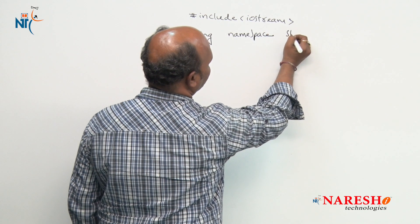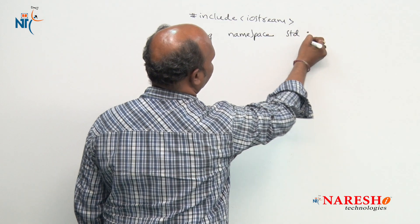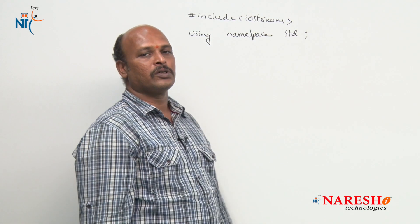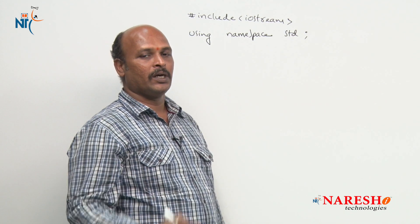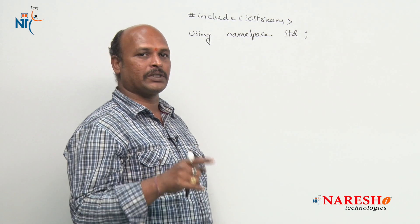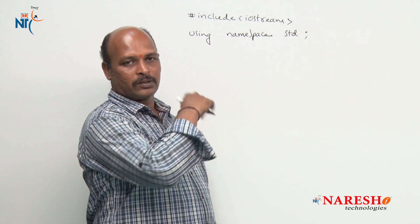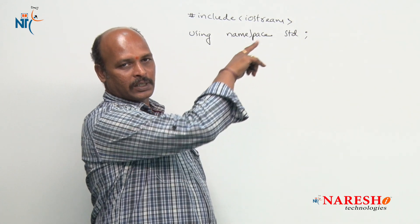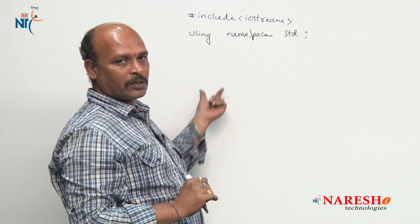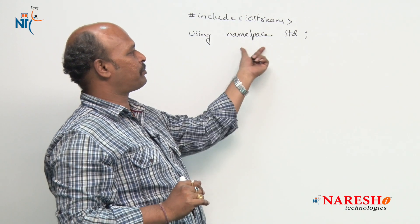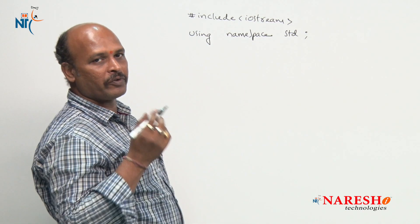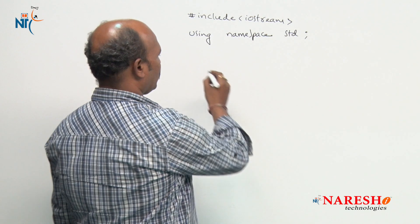Using namespace std, because in our example we are going to use cout and cin objects. The cout and cin objects belong to the std namespace. That is why whenever you are using cout or cin objects, use the namespace std, otherwise we have to write std colon colon every time.